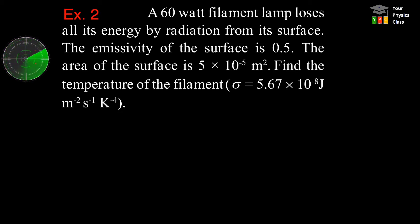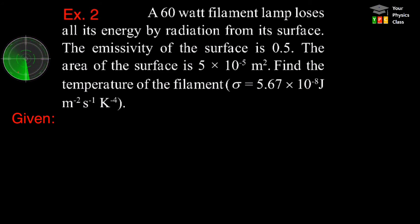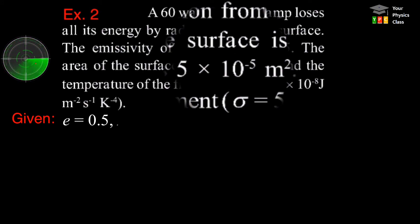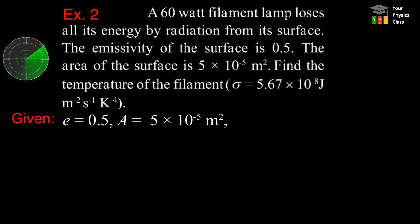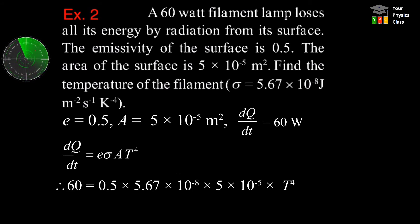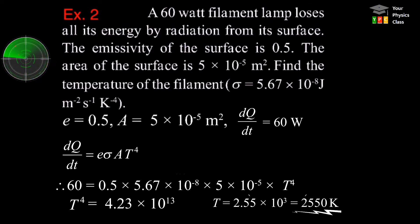Example 2: A 60-watt filament lamp loses all its energy by radiation from its surface. The emissivity of the body is 0.5 and the area of the surface is 5 times 10 raised to minus 5 square meters. Find the temperature of the filament. Given: emissivity = 0.5, area = 5×10⁻⁵ m², power = 60 W. Using the Stefan-Boltzmann law and substituting values, we get 2550 Kelvin as the answer.